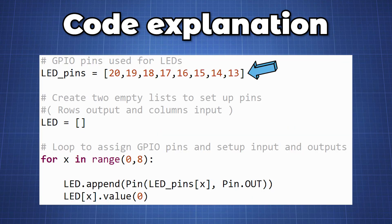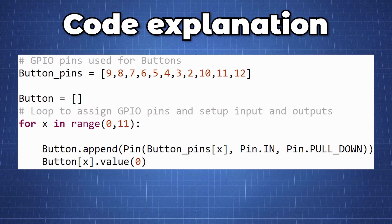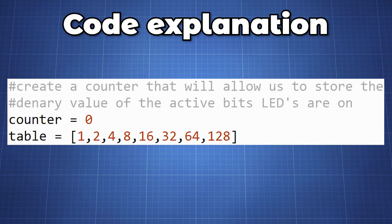In the next step we will create a list of GPIO pins for our LEDs that we will connect. We create an empty list to set up the initial pins as output by looping through the LED pins list. We will repeat the same process for buttons but setting them as input with internal pull-down resistors. We will then create a counter that will allow us to store a denary value of the active bits that are high using the decimal to binary conversion table.